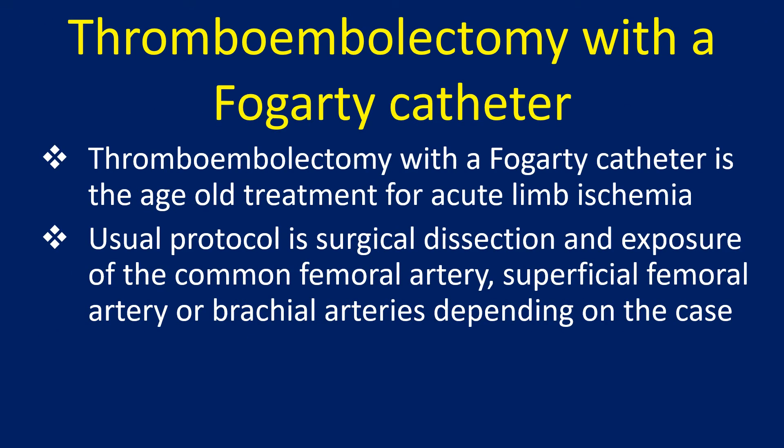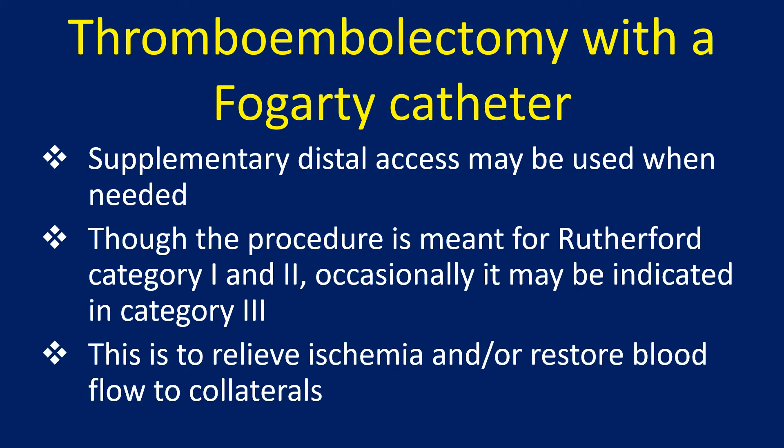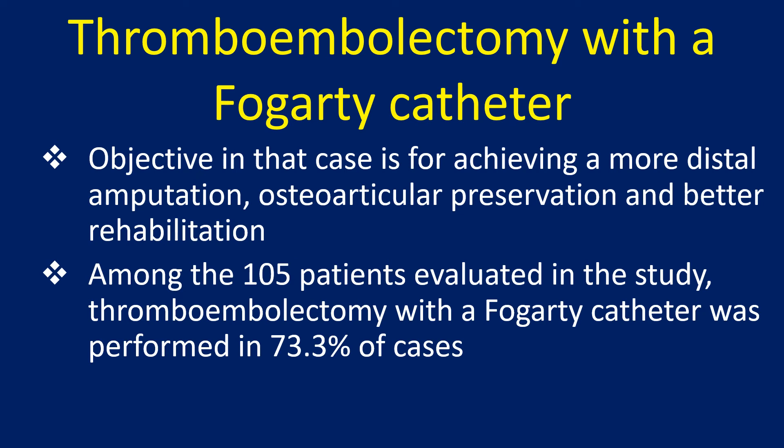Thromboembolectomy with a Fogarty catheter is the age-old treatment for acute limb ischemia. The usual protocol is surgical dissection and exposure of the common femoral artery, superficial femoral artery, or brachial arteries depending on the case. Supplementary distal access may be used when needed. Though the procedure is meant for Rutherford Category 1 and 2, occasionally it may be indicated in Category 3, to relieve ischemia and restore blood flow to collaterals, achieving a more distal amputation, osteoarticular preservation, and better rehabilitation.